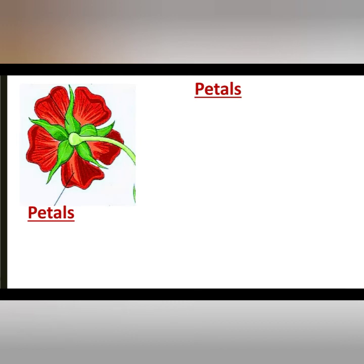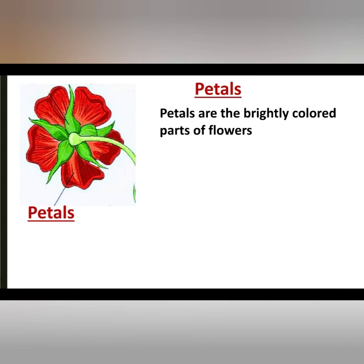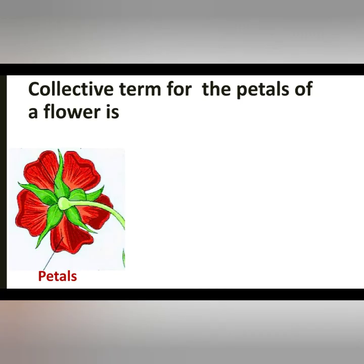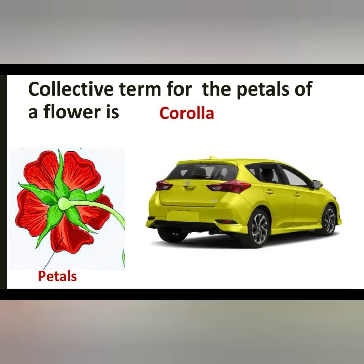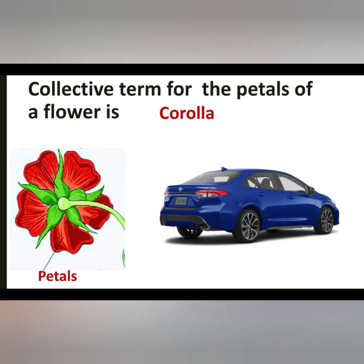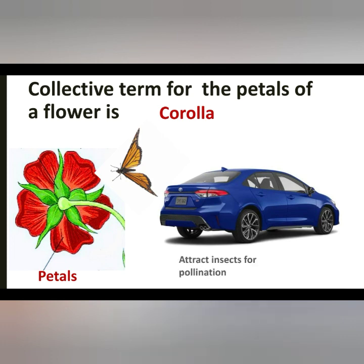The petals are the brightly coloured part of flowers. They are large and come in varieties of colours like red, yellow, pink, or any other colour you can think of. Over here on our screen we have a petal which is red in colour. A collective term for the petals of a flower is corolla. This reminds me of a brand of car called Corolla, which occurs in different varieties of colours. These pretty colours of the corolla are what attract insects to the flower, and that is the function of the petals — specifically to attract insects for pollination.